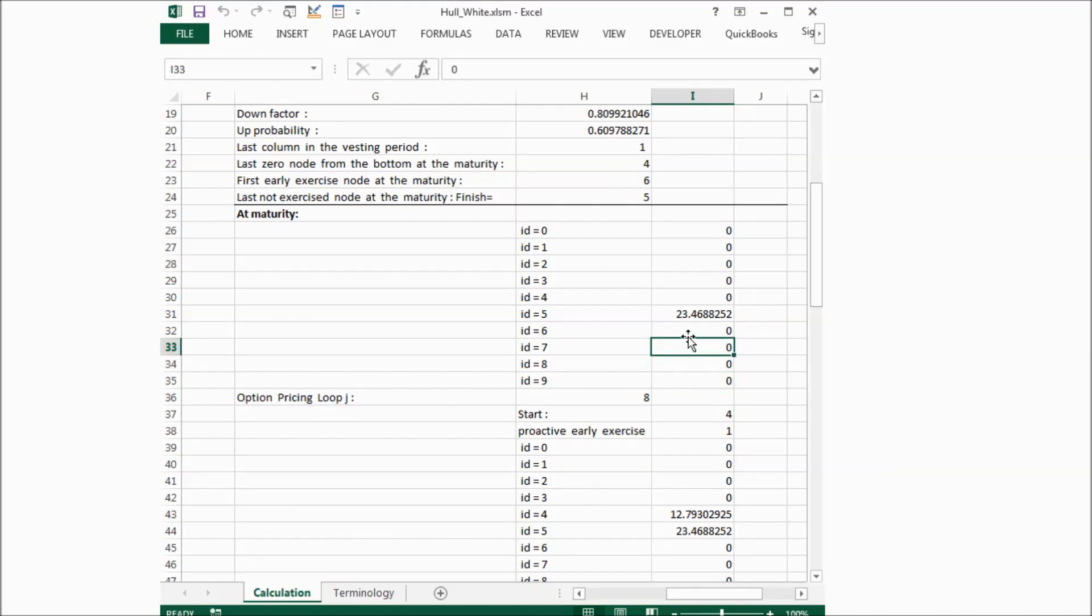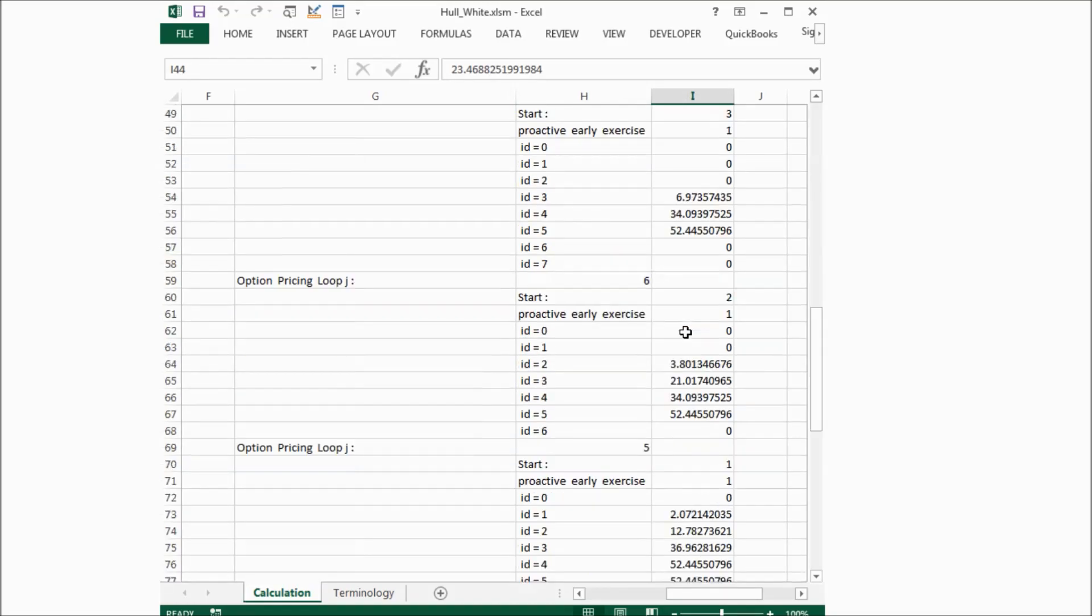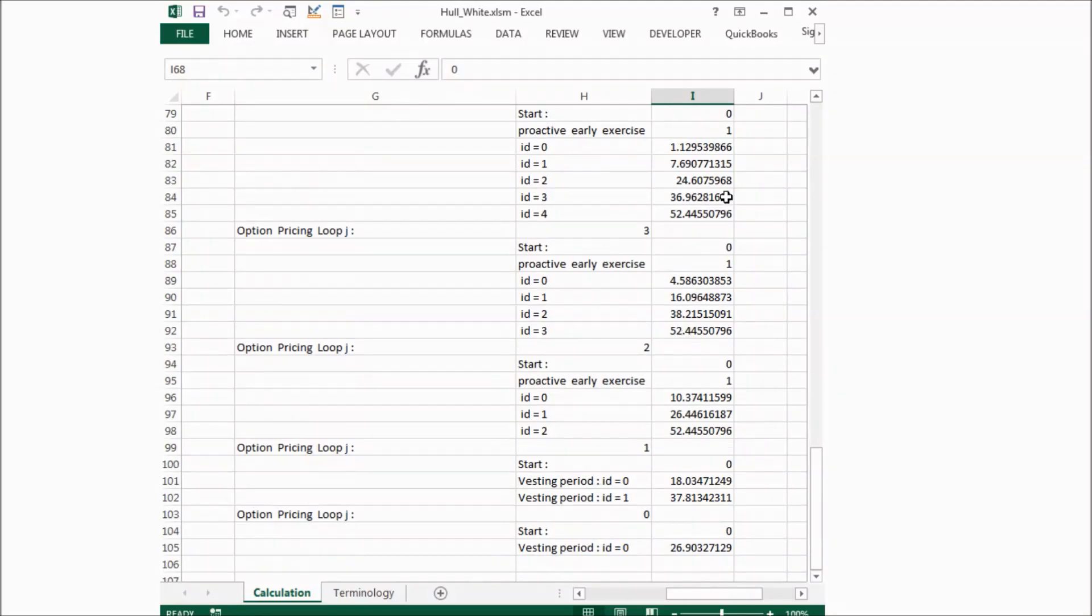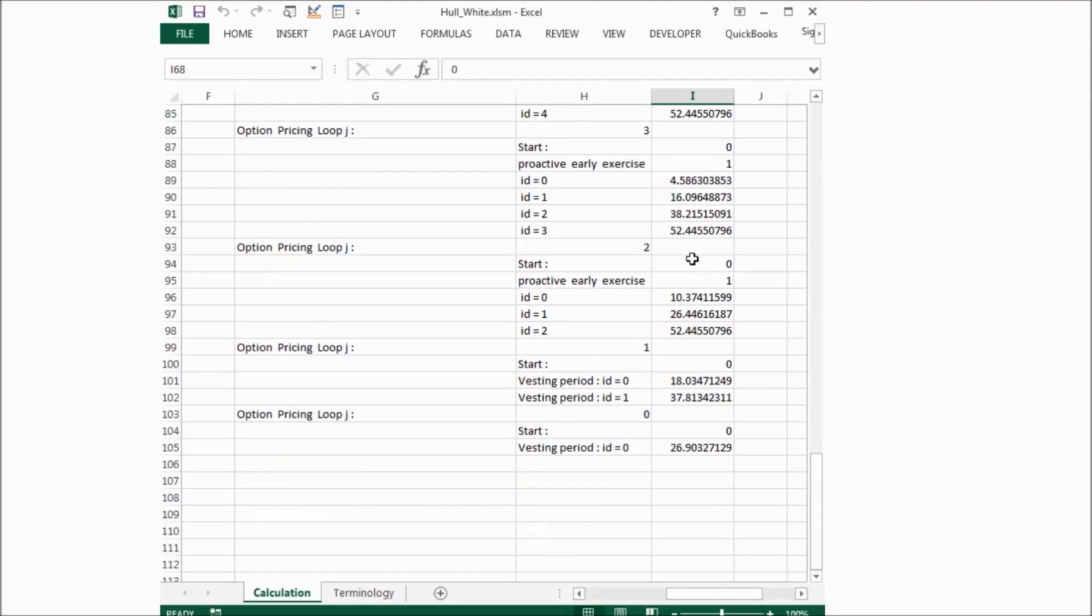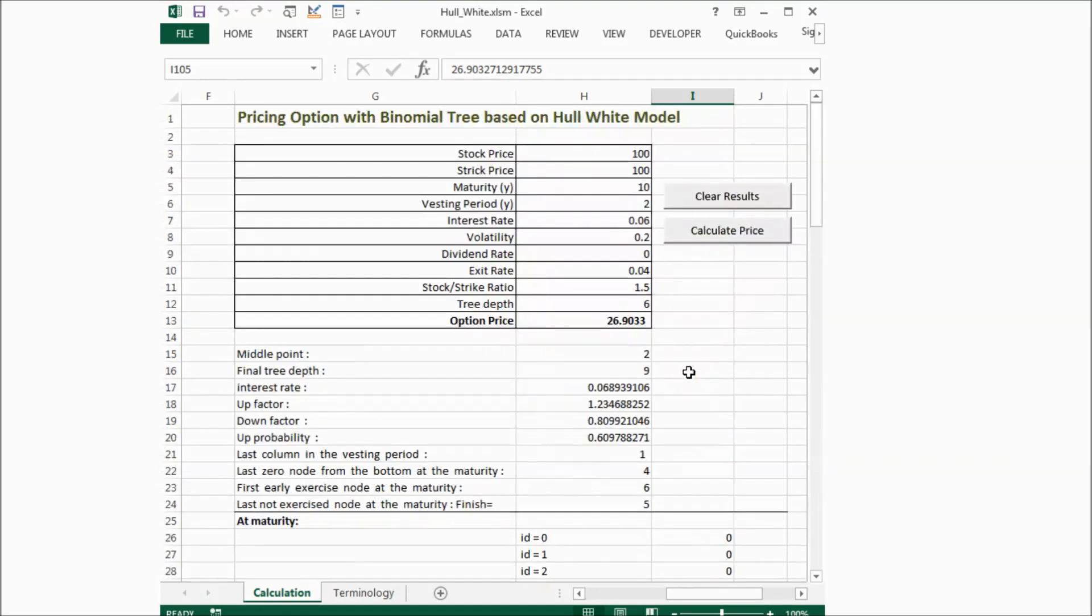And then we go back one step. And this time, node 4 and 5 have the value. And if we go down, we can see more and more nodes have the value. Eventually, we got the option price 26.9, which is the result of our calculation.